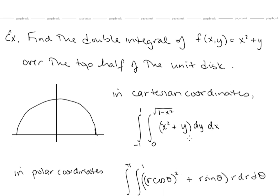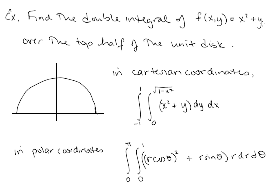Let's look at an example: find the double integral of f(x, y) equals x squared plus y over the top half of the unit disk. In Cartesian coordinates, the domain requires y going from 0 to the square root of 1 minus x squared, and x going from negative 1 to 1. When integrating with respect to y, we'd have to deal with x squared times the square root of 1 minus x squared — this won't be easy in Cartesian coordinates.